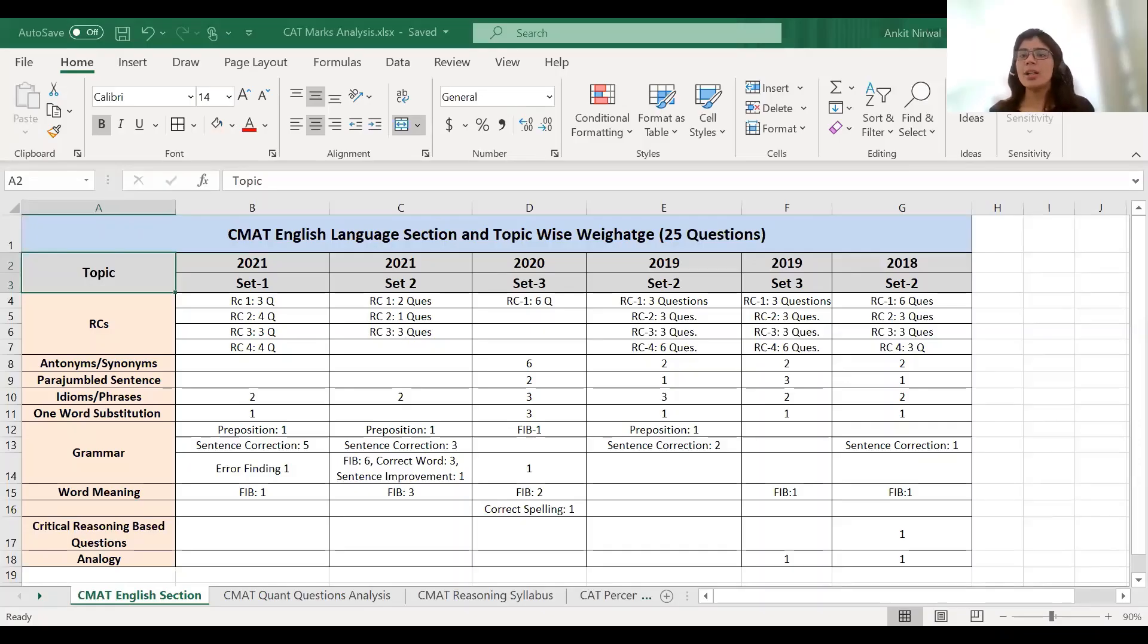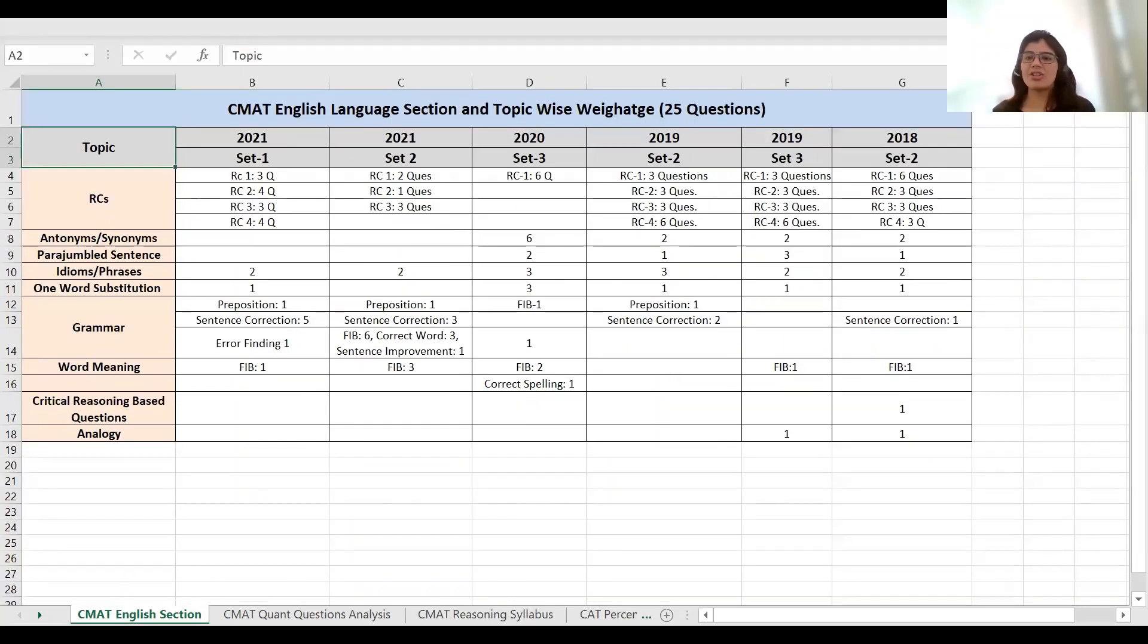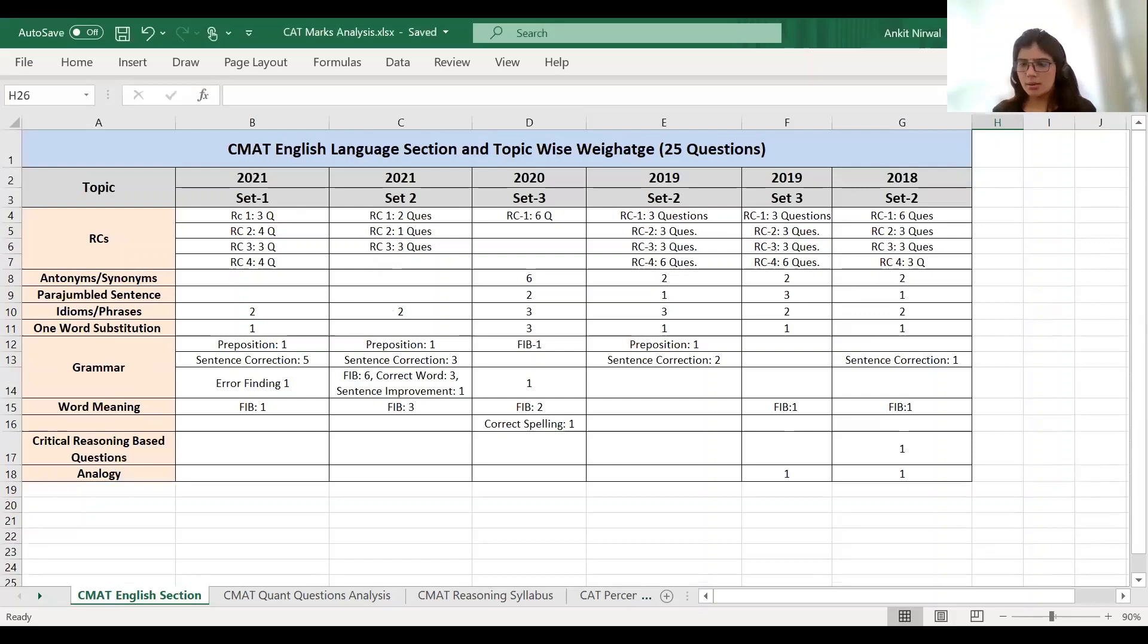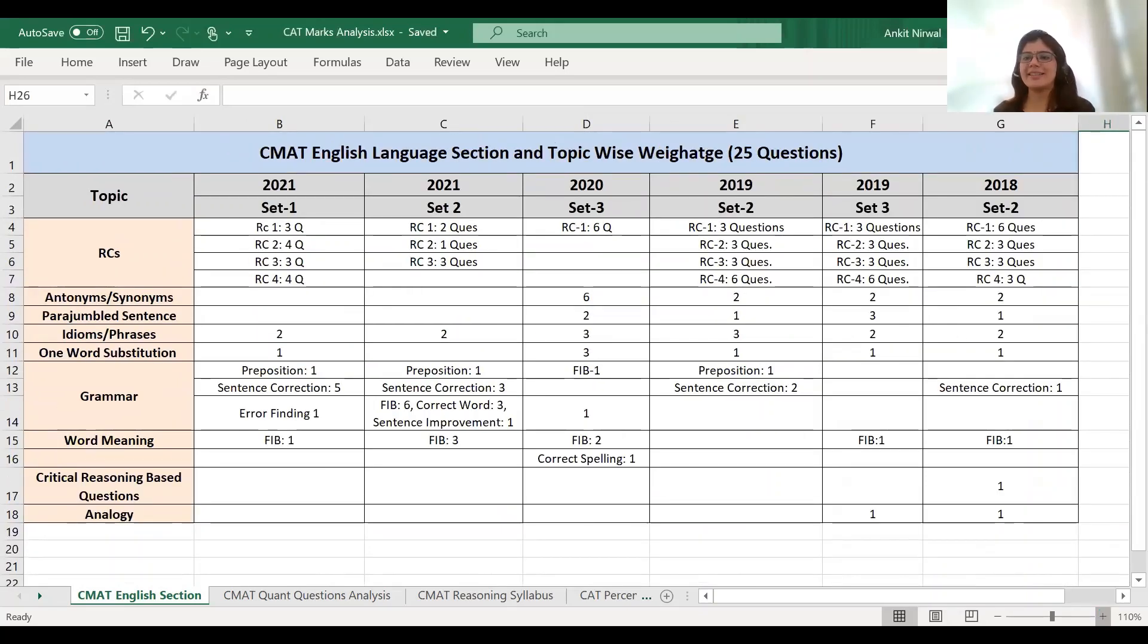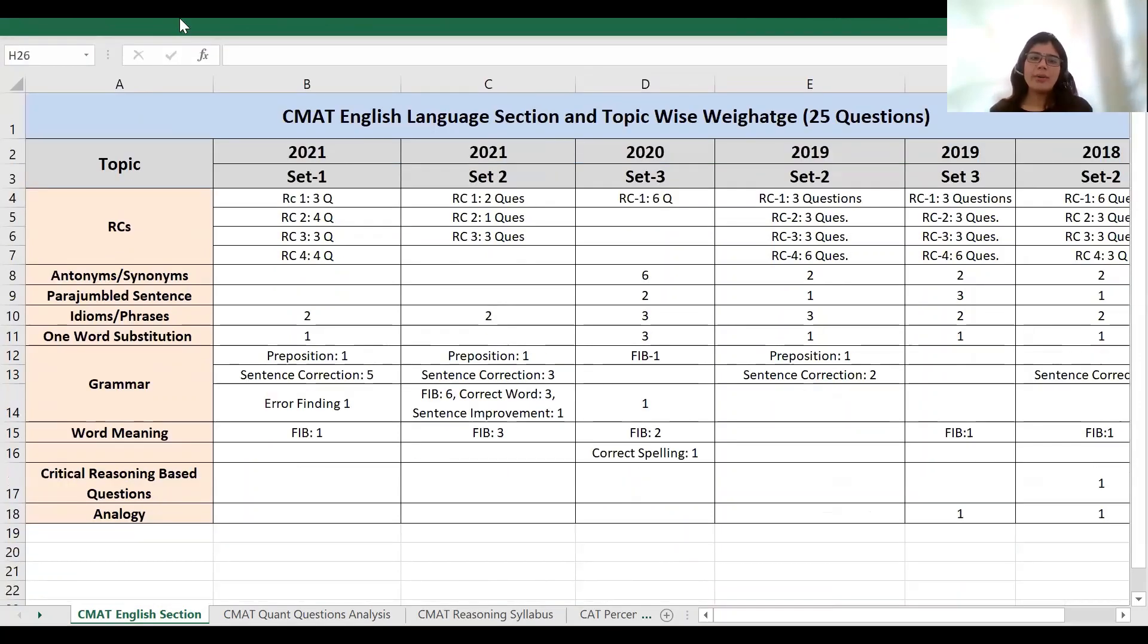So let's start the detailed analysis of the English section. I have made a whole Excel sheet here. I will tell you in this Excel sheet which section is going to be very fast. I have both set of 2021, set of 2020, set of 2019 set 3, and set of 2018 set 2. This paper has made an analysis of how many RCs are asked, how many of our grammar related questions are.